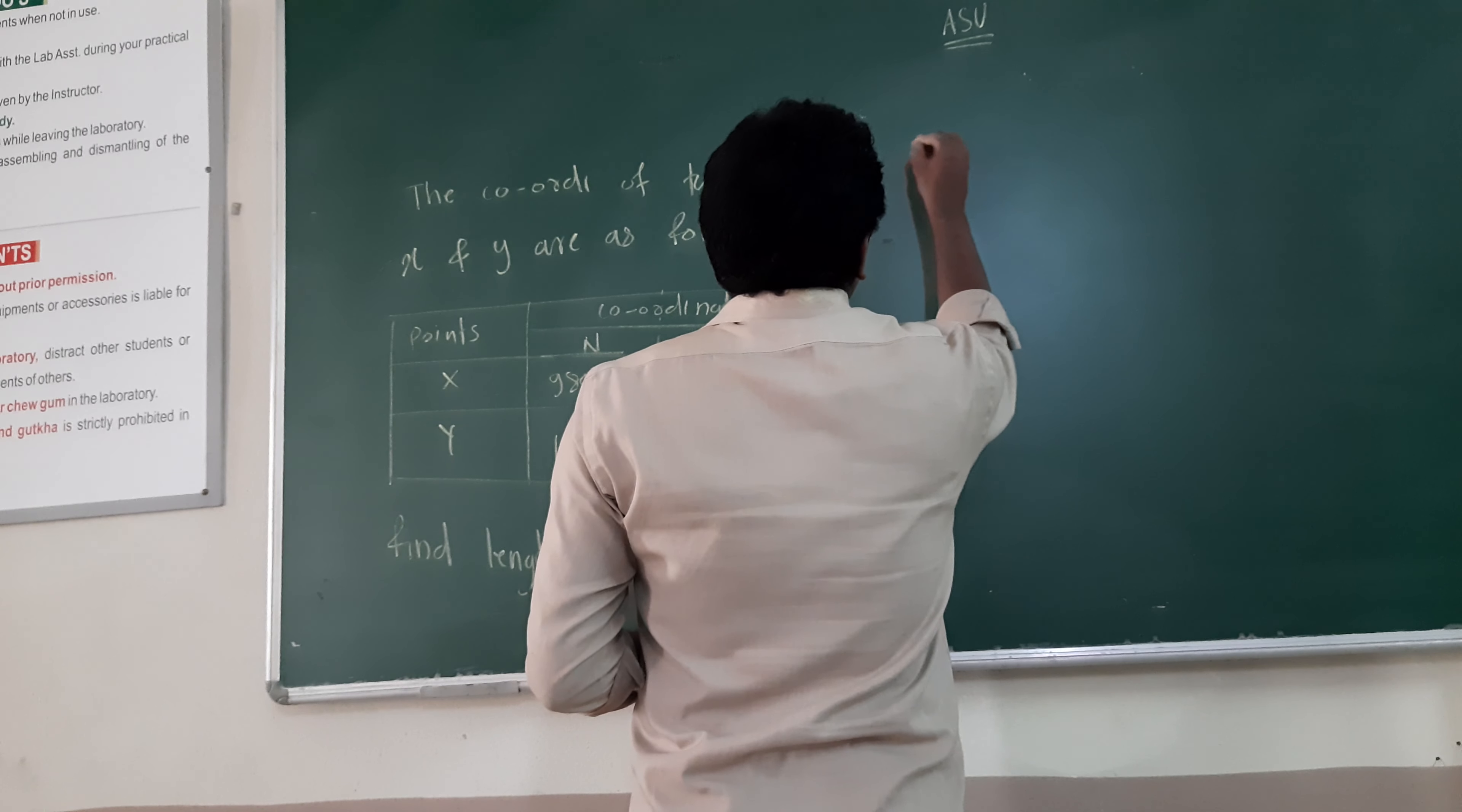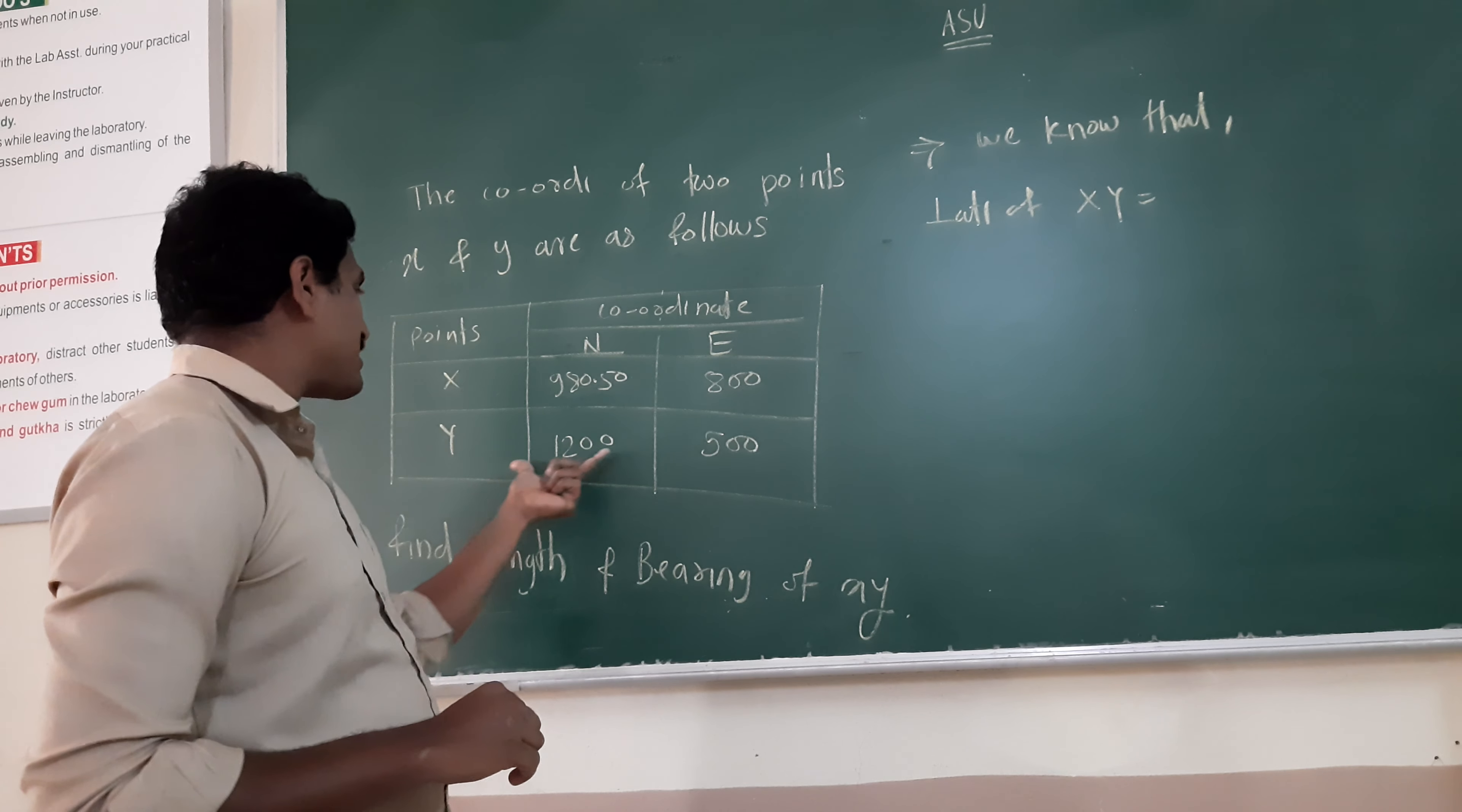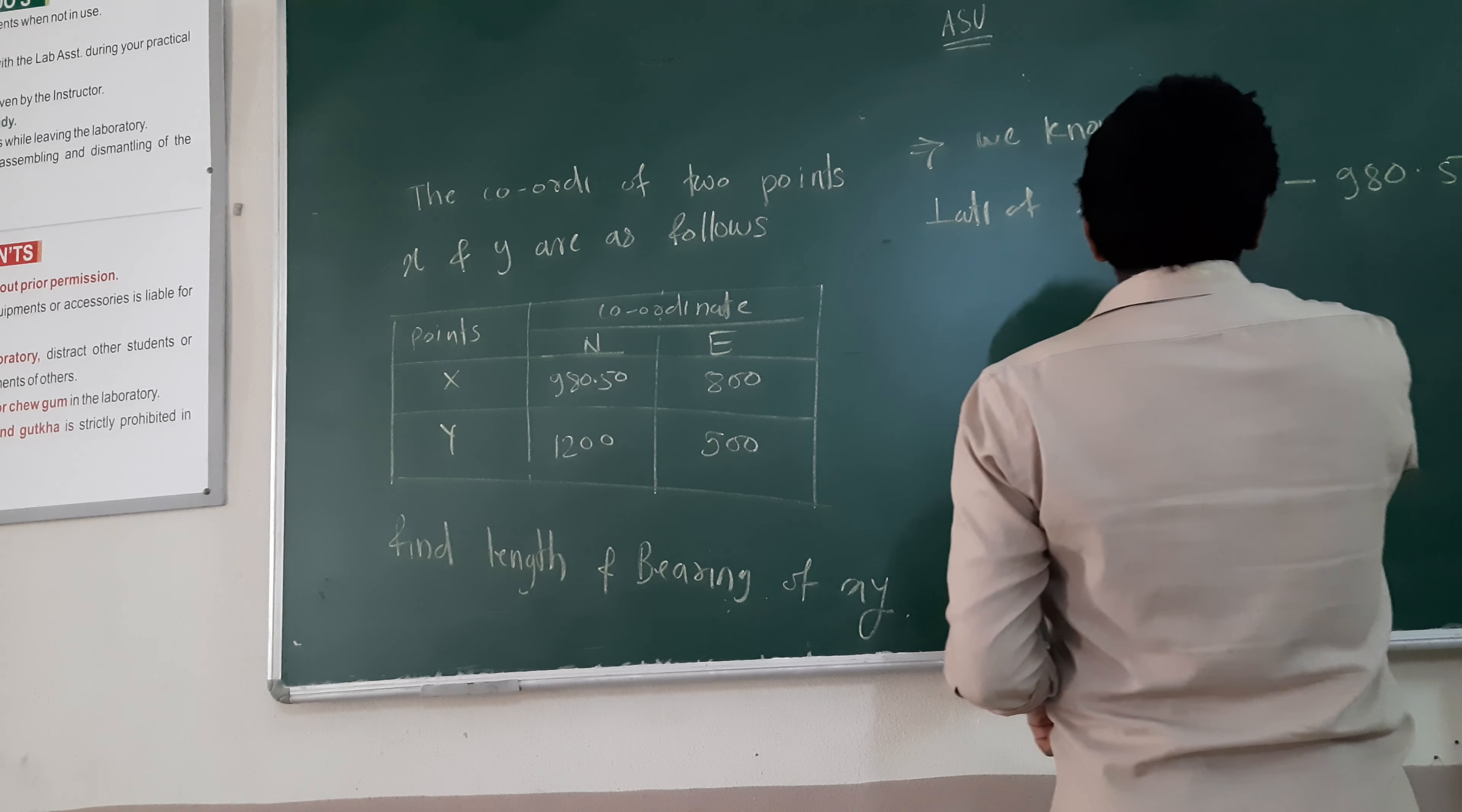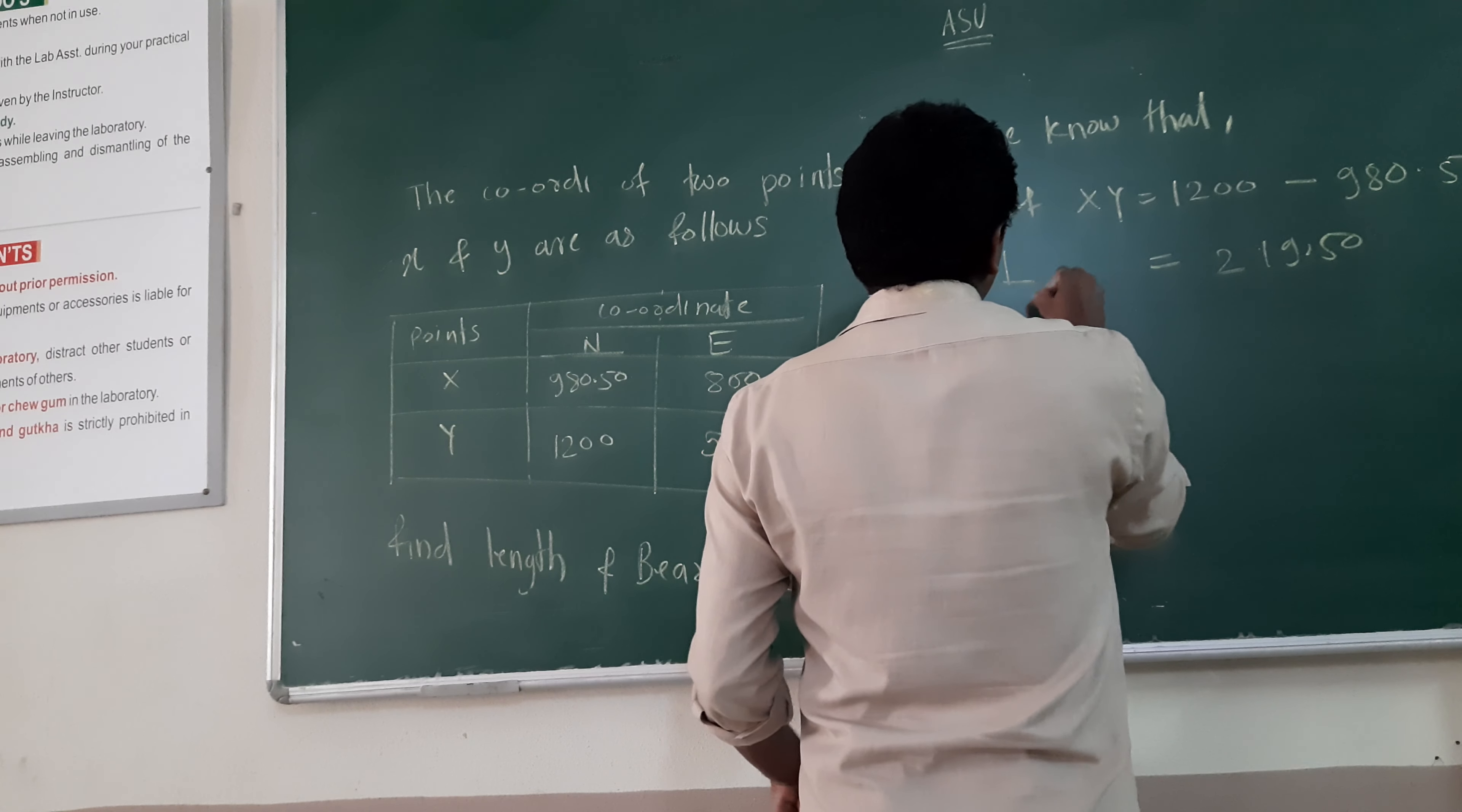Solution: We know that latitude of XY is equal to Y coordinate minus X coordinate north. So 1290.50 minus X coordinate north. 1290.50, that is the calculation here. Latitude of XY line.